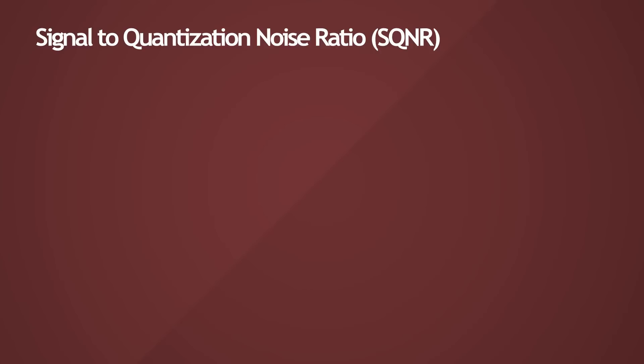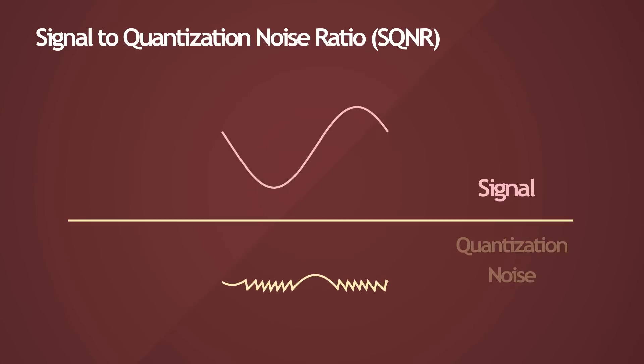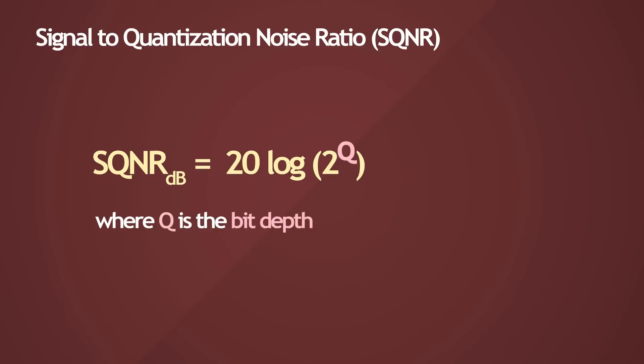Signal-to-quantization noise ratio, or SQNR, is a widely used metric in measuring the quality of the analog-to-digital conversion process. Though it's not the only metric used, it gives us an idea about the dynamic range that's possible with a given bit depth. It's a simple formula, where Q is the bit depth. You can see that the only factor that determines the signal-to-noise ratio is the bit depth. So this formula can be further simplified like this.